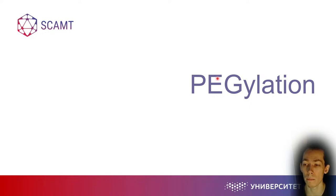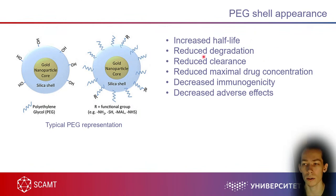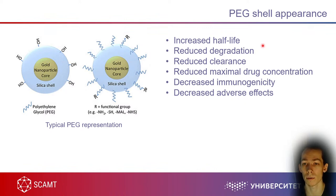We need to start from something very familiar: PEGylation. PEGylation is the process of covering your particles with PEG — polyethylene glycol. Even 15–20 years ago, PEGylation was everything. If you needed to increase half-life — PEGylation. Reduce degradation in physiological media — PEGylation. Reduce clearance by kidneys or liver — PEGylation. It was believed that PEG was fully biocompatible with no drawbacks.